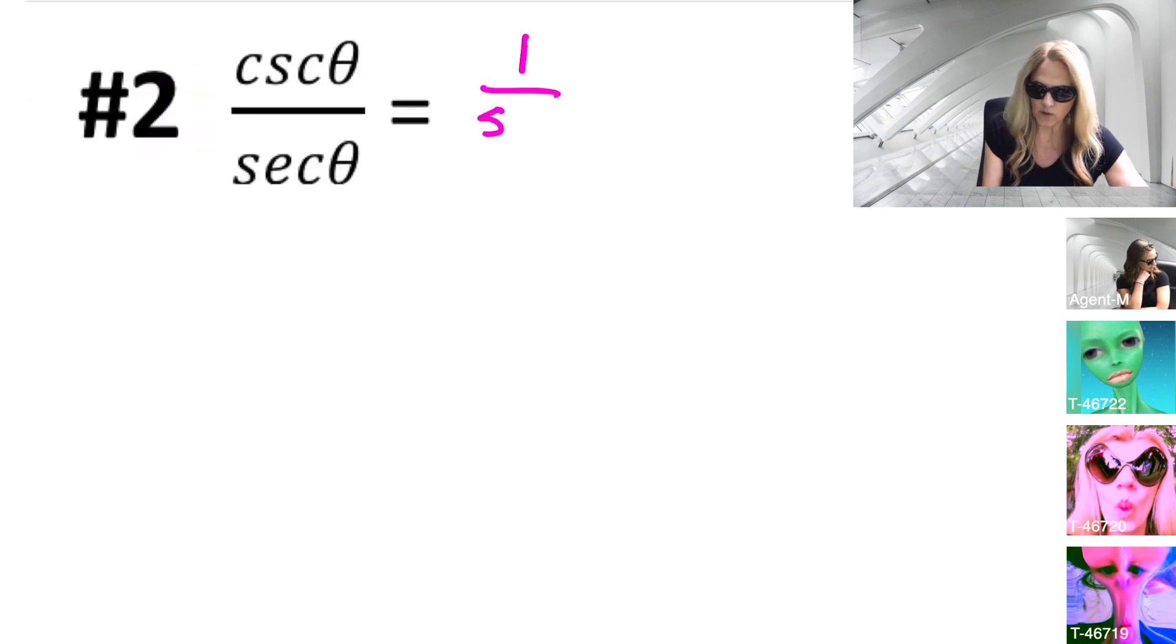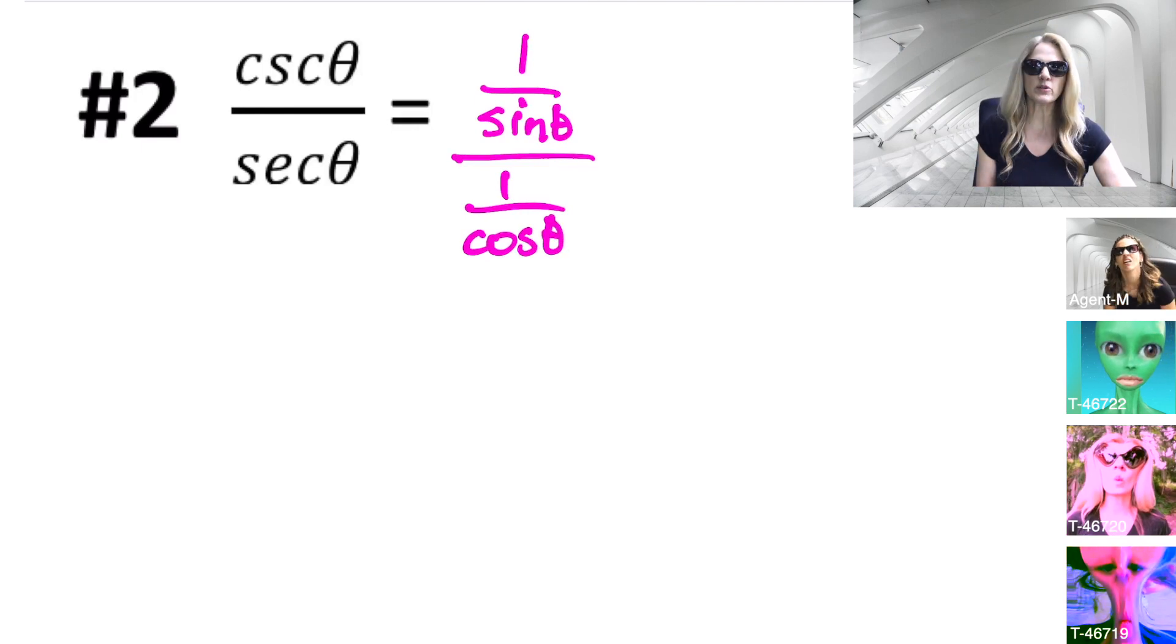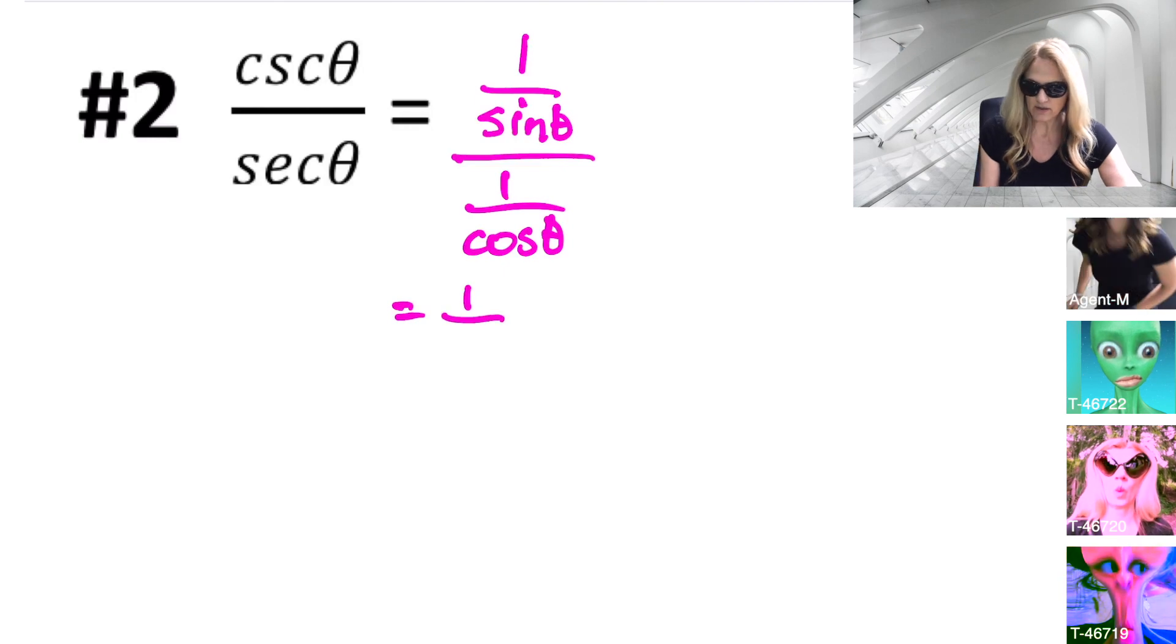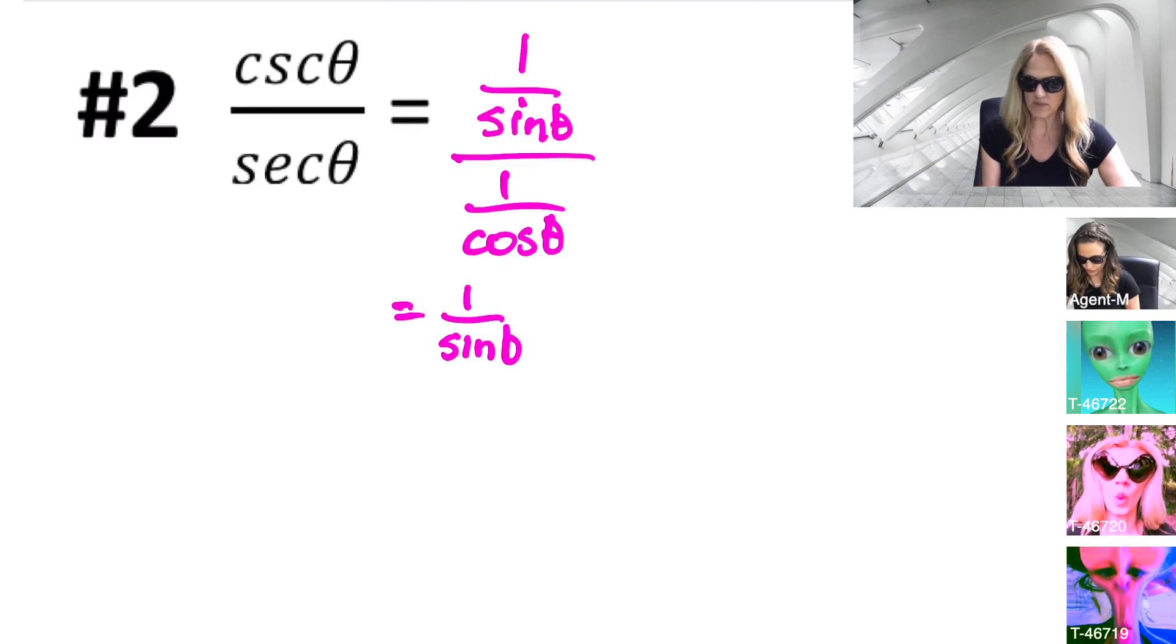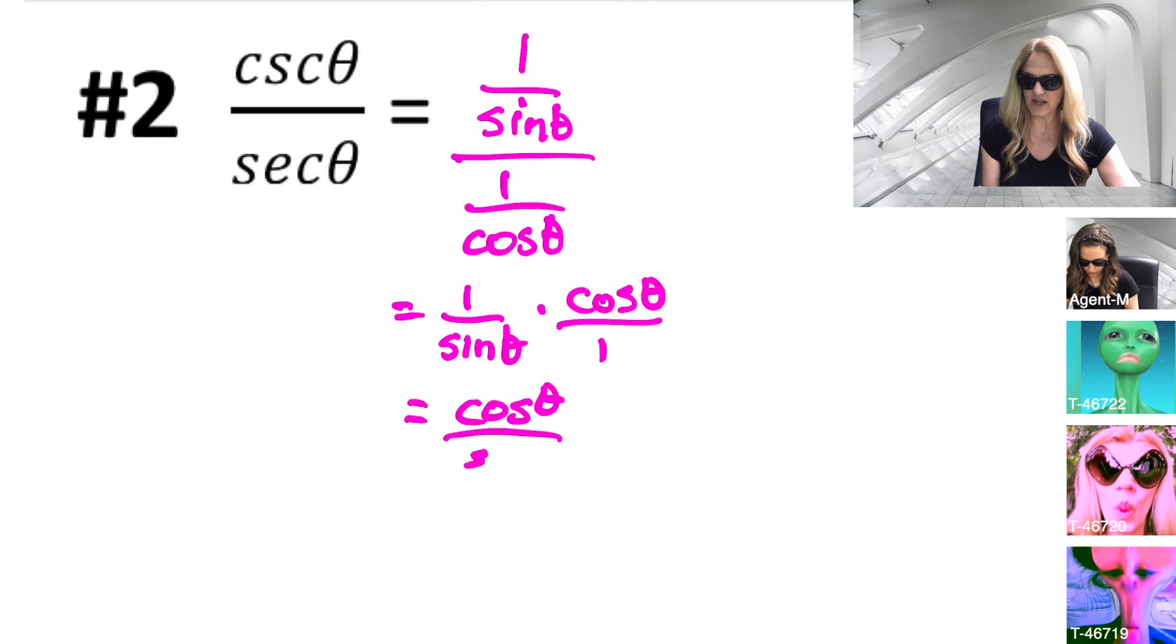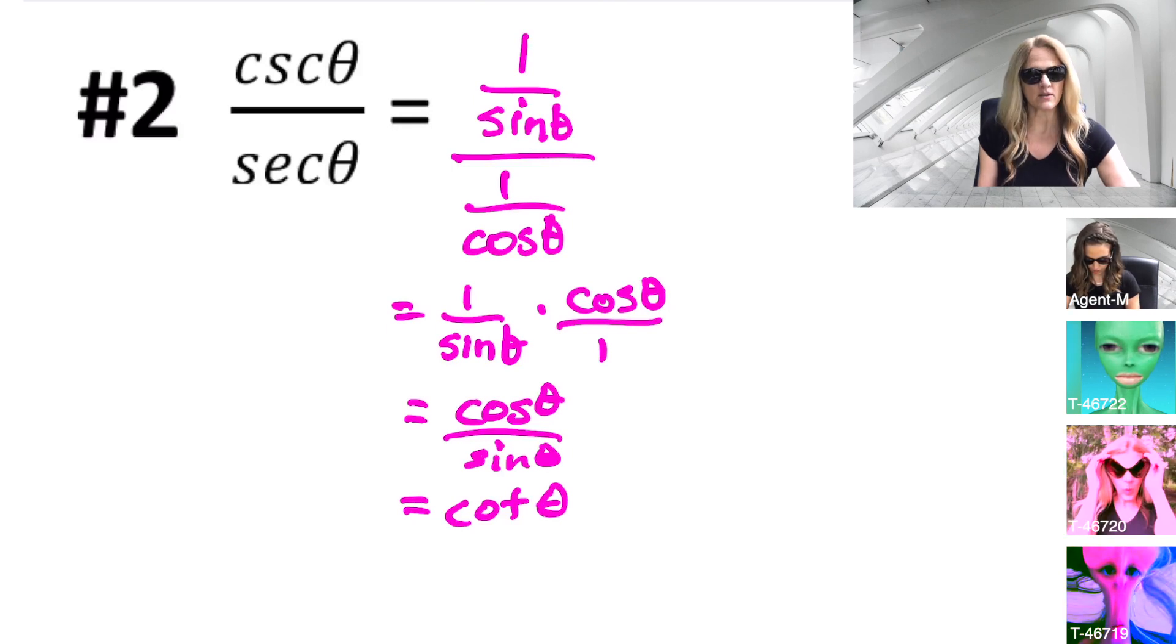Cosecant is one over sine theta. That is being divided by secant theta, which is one over cosine theta. Please remember that when dividing fractions, we multiply by the reciprocal of the second fraction. Therefore, I have one over sine theta times cosine theta over one. When I multiply those together, cosine theta divided by sine theta, which is our trigonometric function cotangent theta. Good disguise, but not good enough for us.